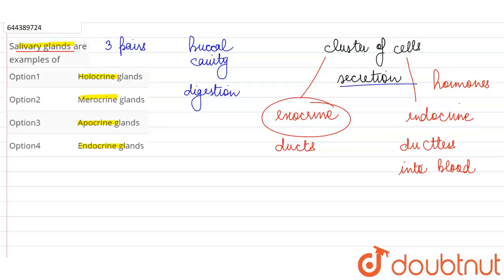Holocrine gland means that when it is pouring the secretion into the duct, the entire cell which has synthesized the substance is going to disintegrate. Such a holocrine gland would be the sebaceous glands that we find in our skin that secrete oil.